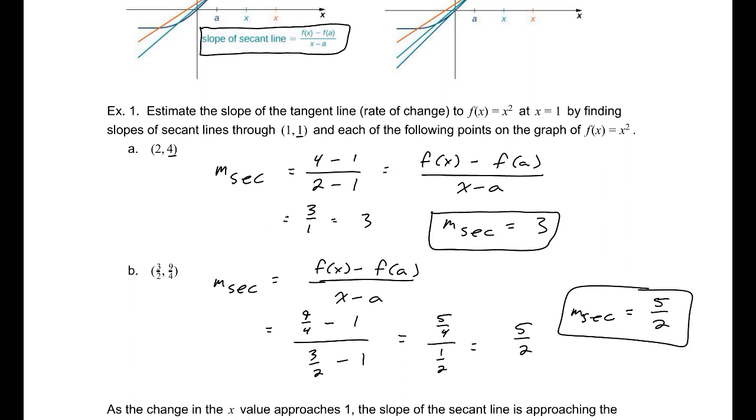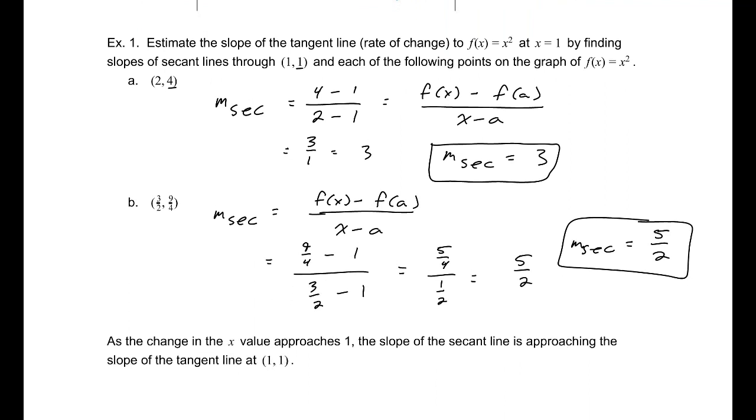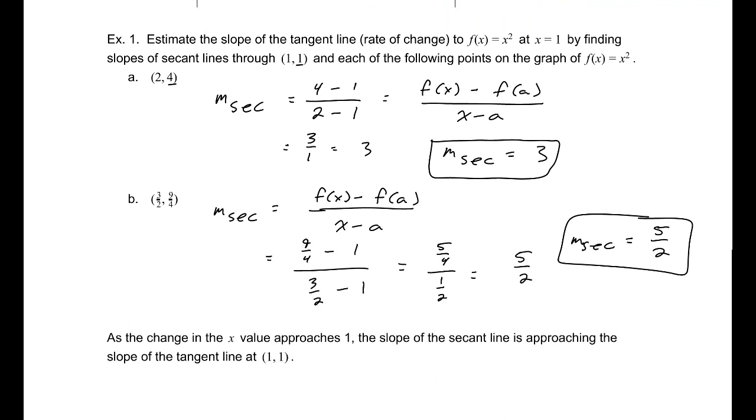If we repeated this process and allowed the change in x, or the x values to approach 1, if we allowed the change between our x and a to go to 0, as they get closer and closer together, that will approach the slope of the secant line at that point.